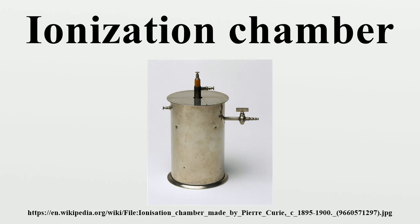This continual generation of charge produces an ionization current, which is a measure of the total ionizing dose entering the chamber. However, the chamber cannot discriminate between radiation types and cannot produce an energy spectrum of radiation. The electric field also enables the device to work continuously by mopping up electrons, which prevents the fill gas from becoming saturated where no more ions could be collected, and by preventing the recombination of ion pairs, which would diminish the ion current.